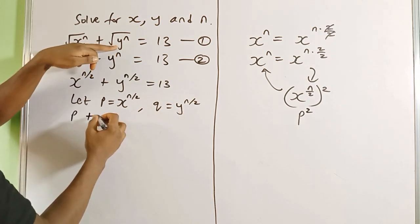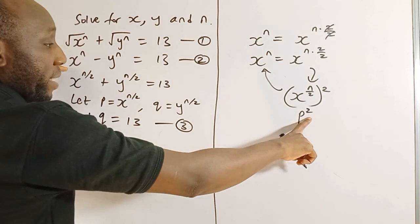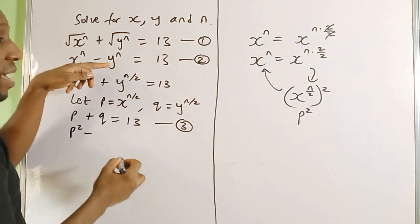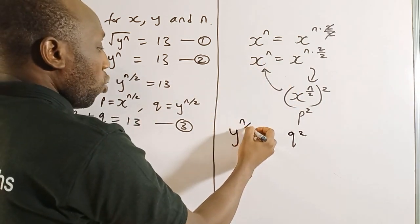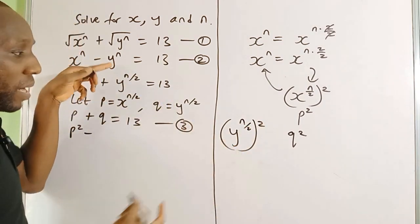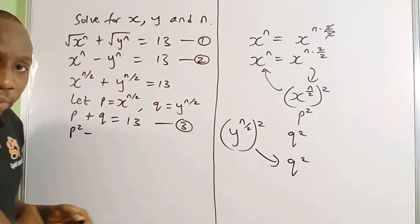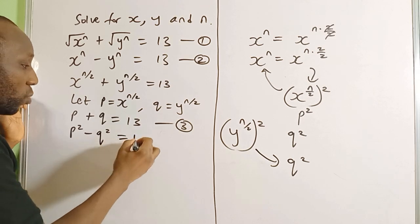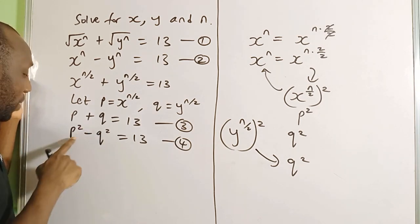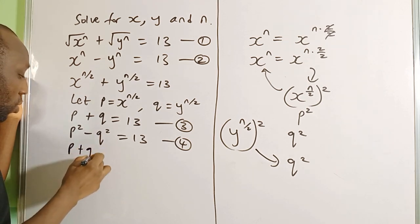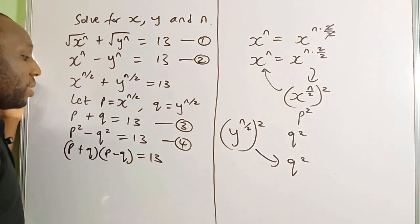So for equation 3 we have p plus q equals 13. For equation 4, the second equation becomes p squared minus q squared equals 13. Now I'm going to use the difference of two squares: p squared minus q squared can be factorized as p plus q, times p minus q, which equals 13. Let's call this equation 5.